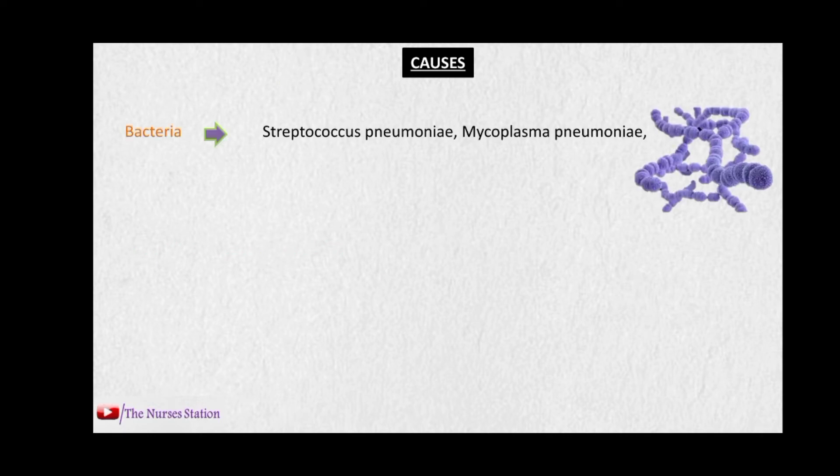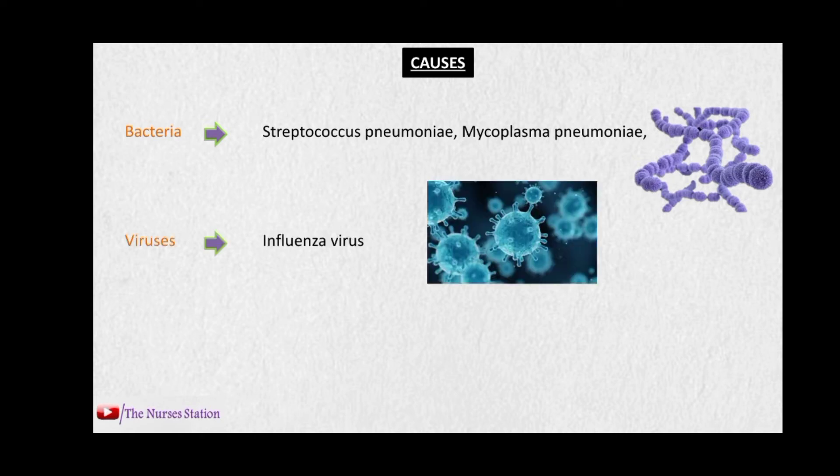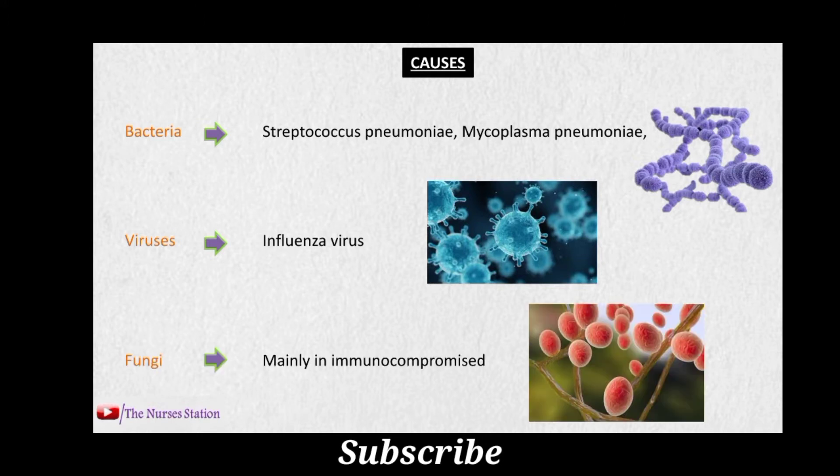The causes of pneumonia include bacteria like Streptococcus pneumoniae and Mycoplasma pneumoniae. Viruses may also cause pneumonia, like the influenza viruses. Fungi cause pneumonia in immunocompromised patients, such as HIV patients or those receiving immunosuppressant therapy.